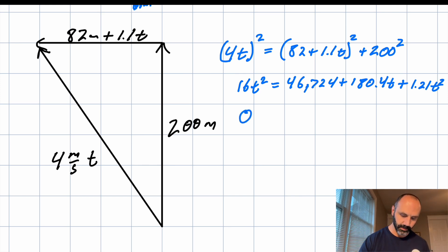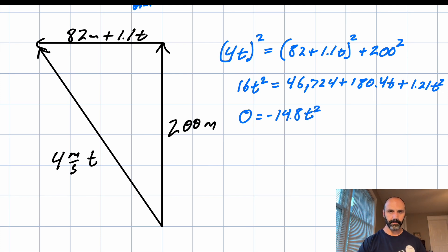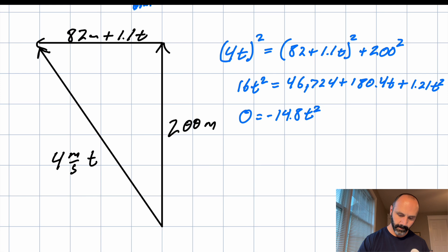Get it all on one side. So zero equals negative 14.8t squared. So I'm putting it in normal, ax squared plus bx plus c format, plus 180.4 plus 46,724.